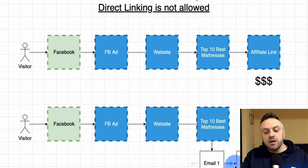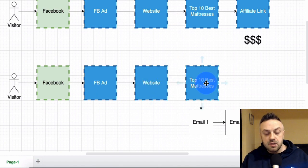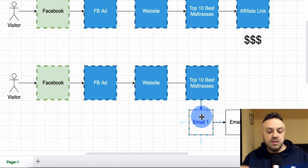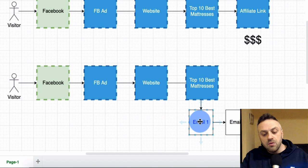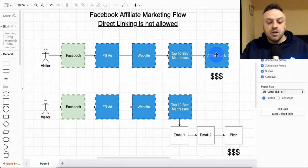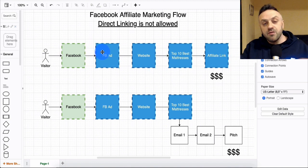The second way is using an email funnel. They scroll down, see a Facebook ad, go to a website about top 10 mattresses or something similar. On the website there's an email opt-in - maybe they want discounts, or need to sign up to see the full top 10 list. Then you give them value in the first email, value in the second email, and then pitch. You can do it either way - capturing email is a really solid approach.